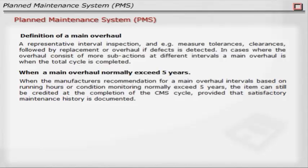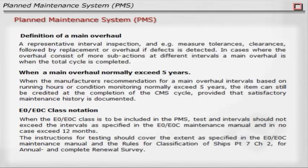When the manufacturer's recommendation for main overhaul intervals based on running hours or condition monitoring normally exceeds 5 years, the item can still be credited at the completion of the CMS cycle, provided that satisfactory maintenance history is documented. EO/EOC Class Notation: When the EO/EOC class is to be included in the PMS, test intervals should not exceed those specified in the EO/EOC maintenance manual and in no case exceed 12 months. The instructions for testing should cover the extent specified in the EO/EOC maintenance manual and the Rules for Classification of Ships Part 7 Chapter 2 for Annual and Complete Renewal Survey.